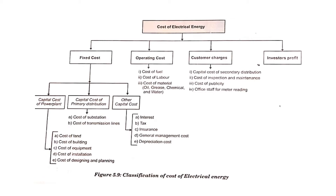The next cost involved in electrical energy generation is operating cost. Here, fuel cost, labor cost, and material cost — such as grease, chemicals, water, and oil — are considered. For day-to-day operation and maintenance of the plant we need this operating cost. Fuel cost, labor cost, and material cost together are classified as operating cost, which is the second major classification of cost.